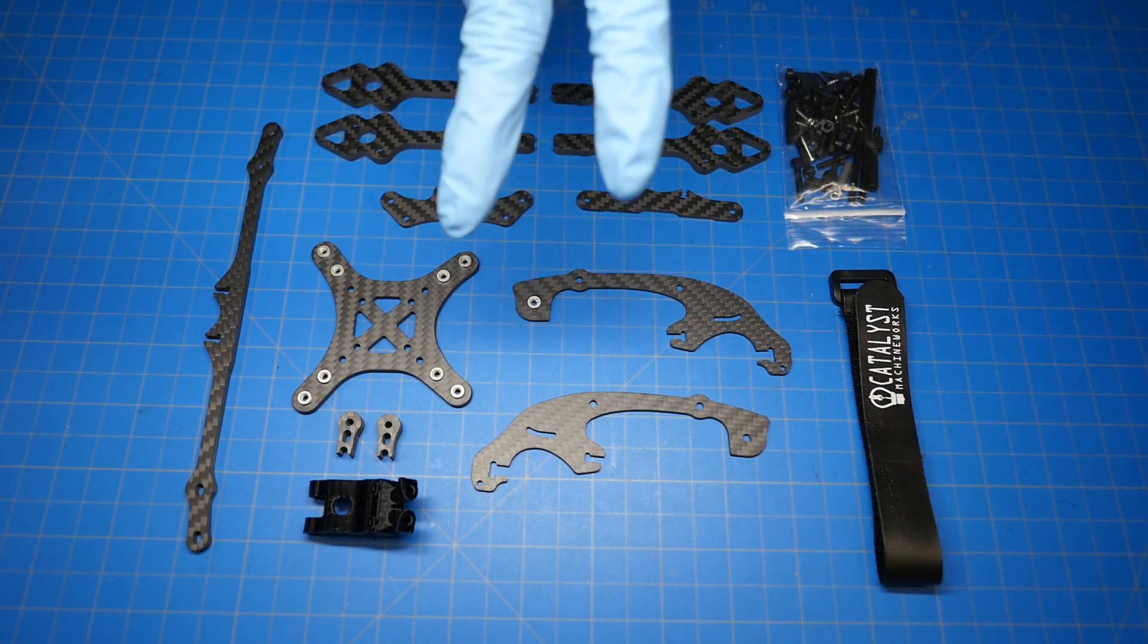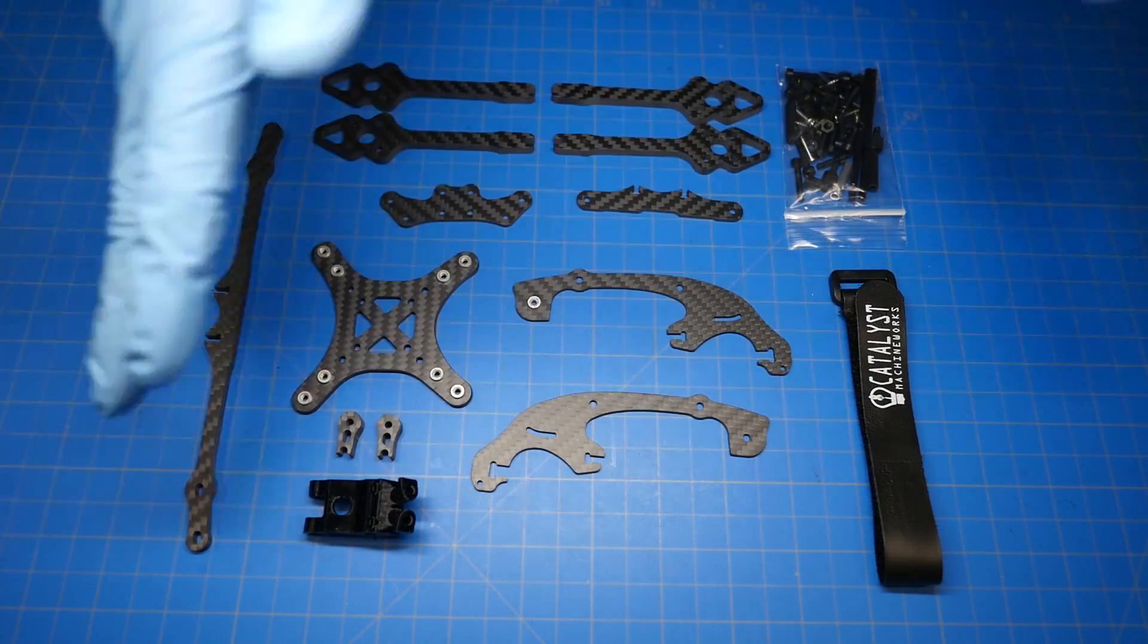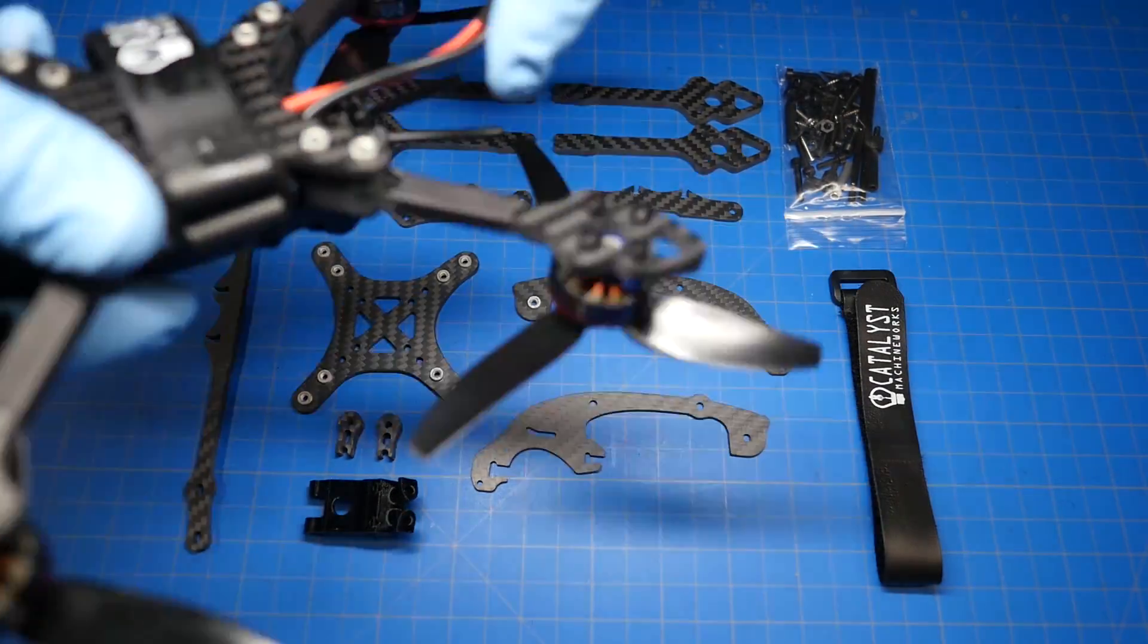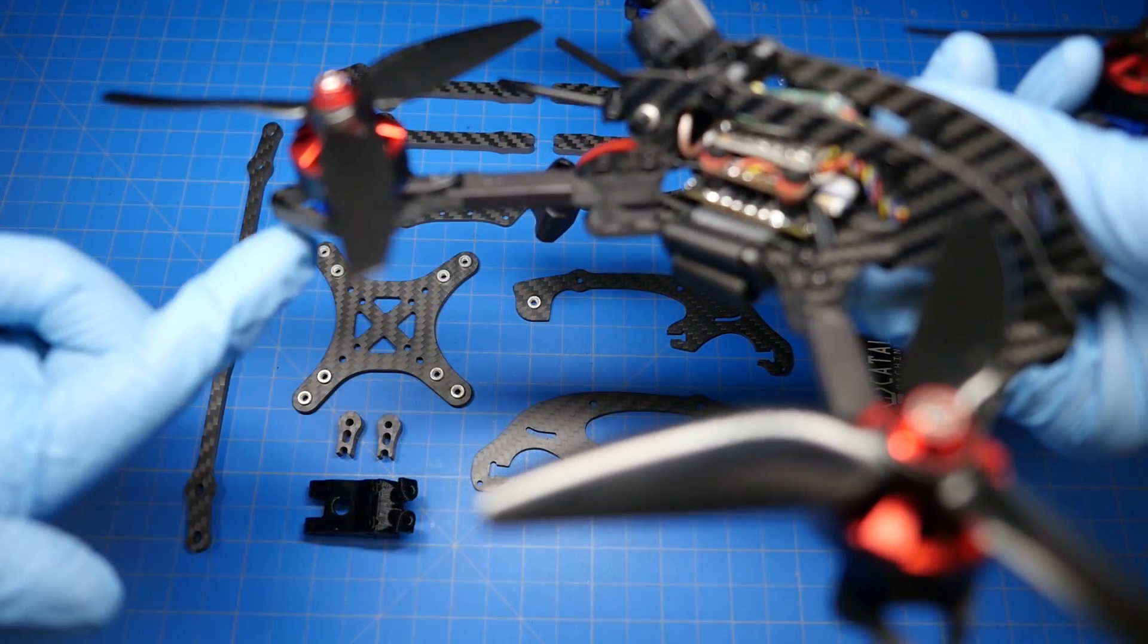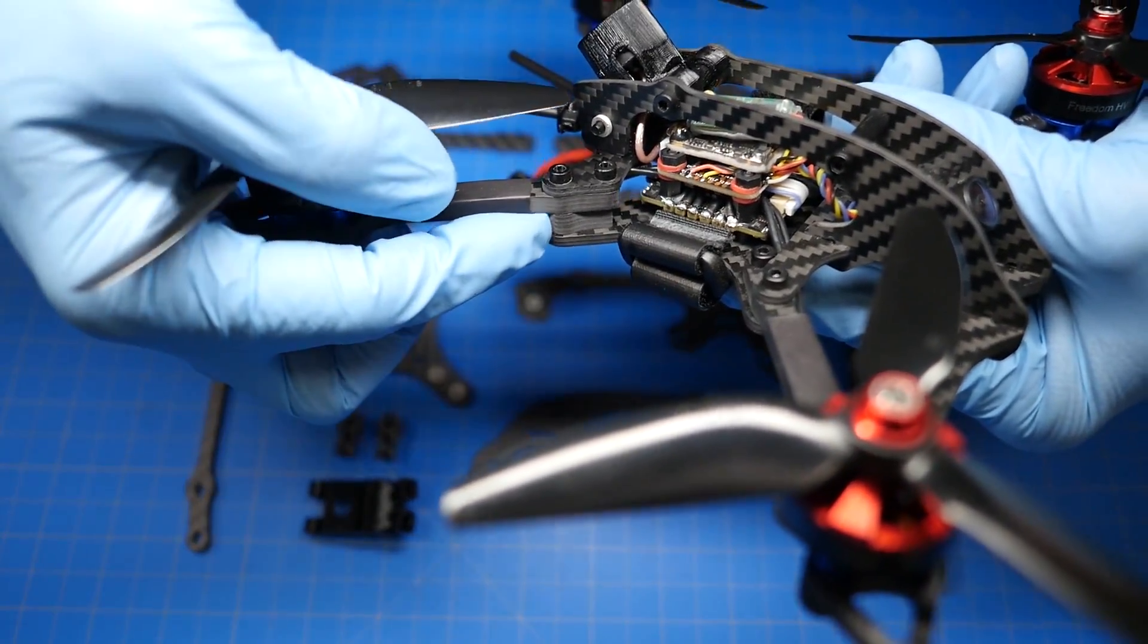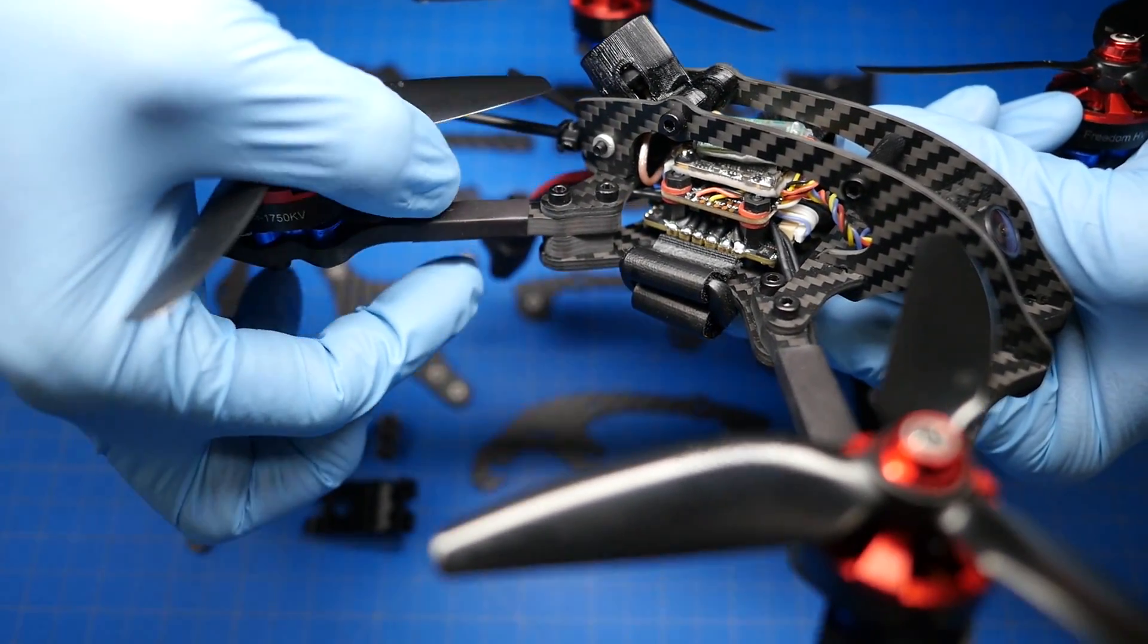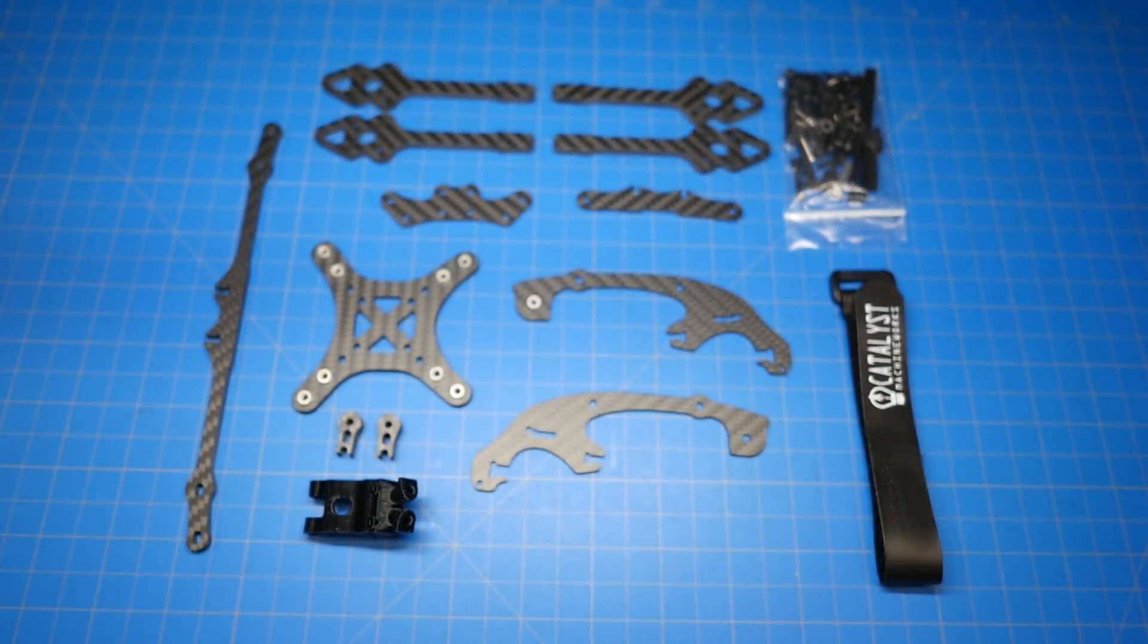Now, there are two types of variants with this. There's the regular, we'll call it the standard spec 5-inch build that you've got here. Then we also have a hybrid. And basically the difference between the hybrid and this guy is that there's 6-inch arms in the back. And these 6-inch arms are a millimeter thicker. Because of that, you have to use a thinner spacer right here. So you've got longer, thicker arms and a thinner spacer. That's the only difference. Otherwise, they're identical.